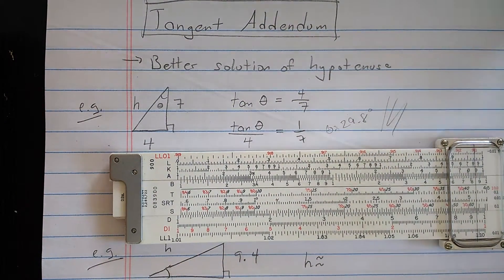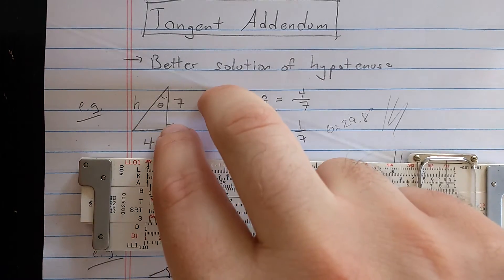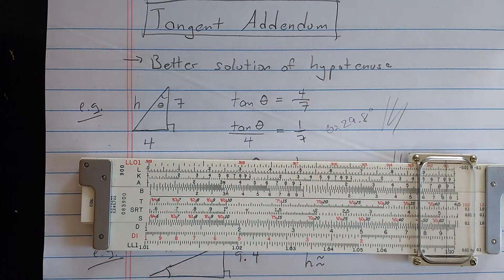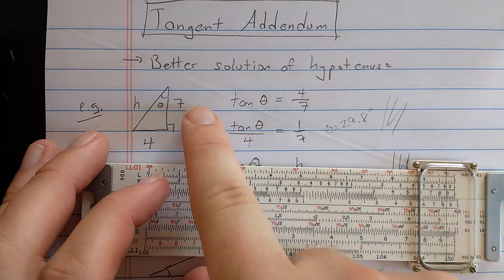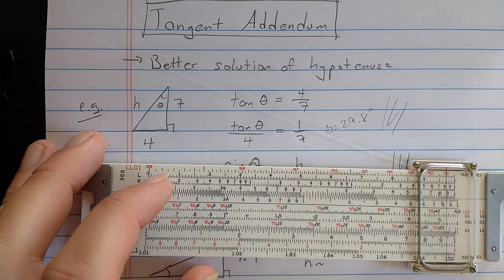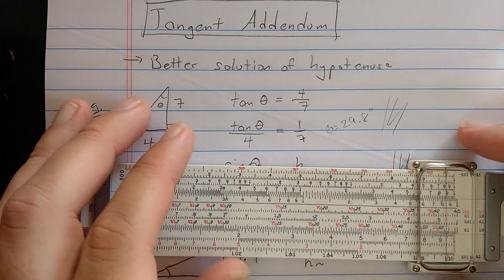What I'm going to do first is a better solution for the hypotenuse of a right triangle where you know two sides. Their idea is you use this property of the tangent, that tangent of theta should be 4 over 7 to first find the angle by solving this proportion.